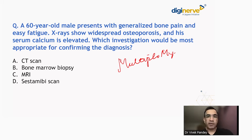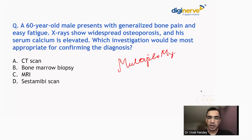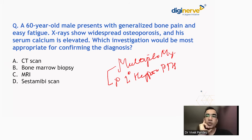Does this fit with multiple myeloma? Other conditions which can also cause generalized bone pain include primary hyperparathyroidism, which can lead to hypercalcemia — because this particular question also shows serum calcium is elevated, that is hypercalcemia. X-ray also shows widespread osteoporosis. So there are two possibilities: one is multiple myeloma, and the second is primary hyperparathyroidism.